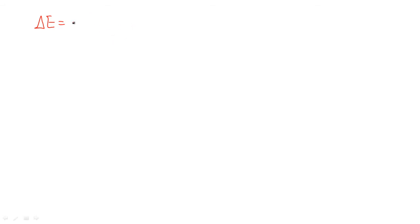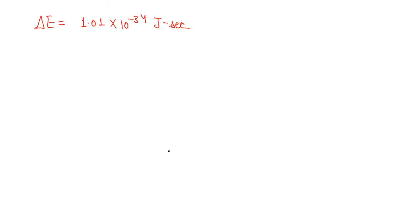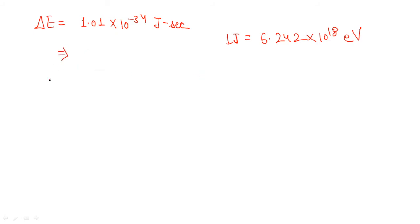Now, ℏ = 1.01 × 10⁻³⁴ joule·seconds. However, since the options are given in electron volts, we need to convert. The conversion is: 1 joule = 6.242 × 10¹⁸ electron volts. So to convert joules to electron volts, multiply by this factor. Simplify and get the value in terms of electron volts.